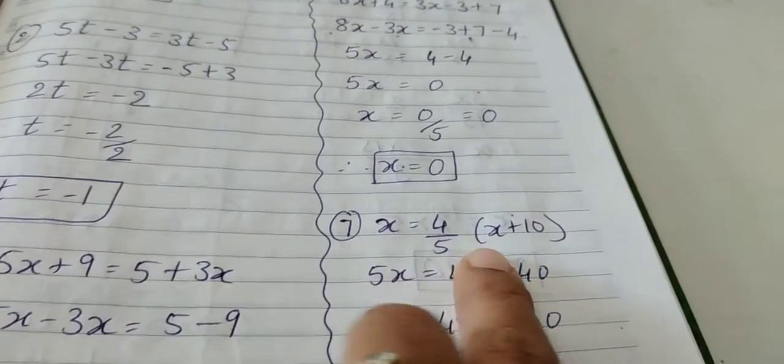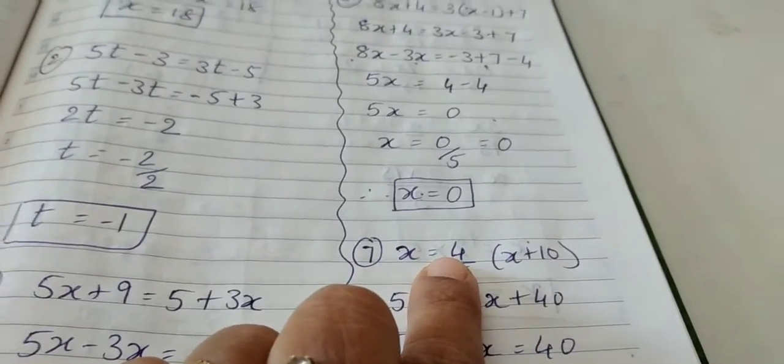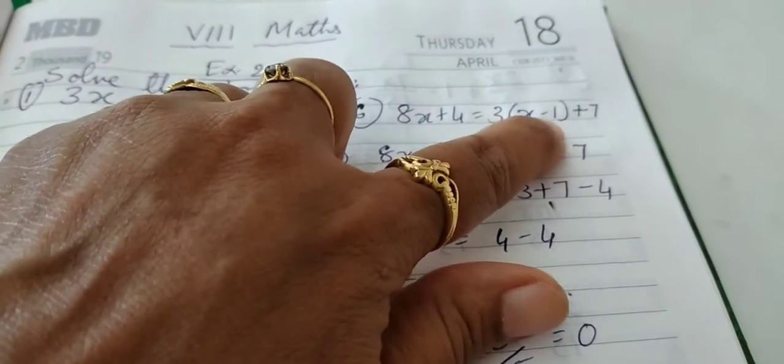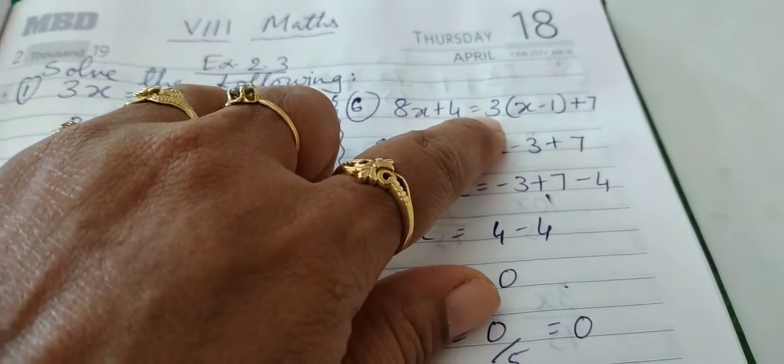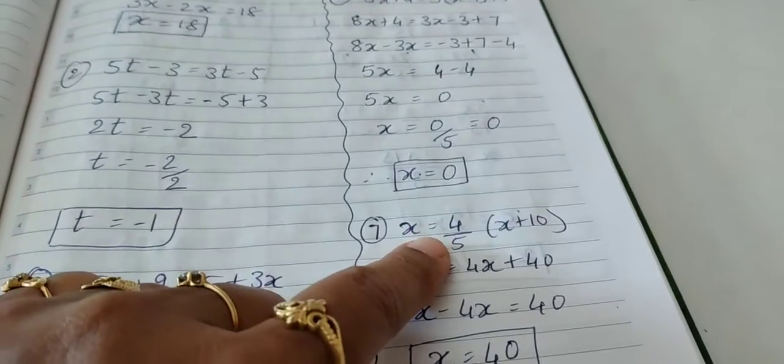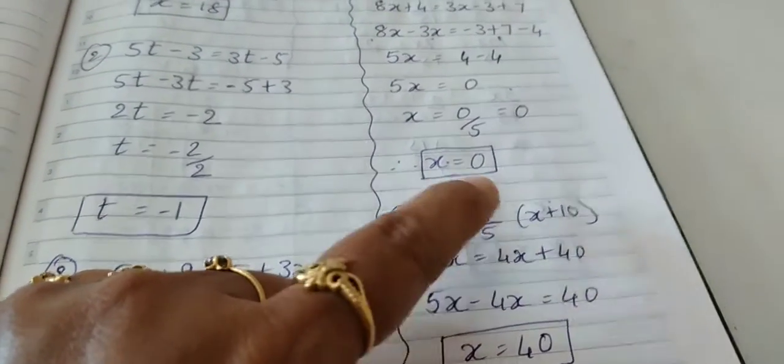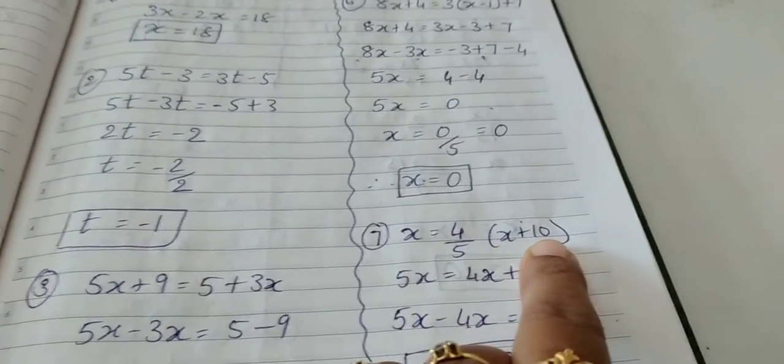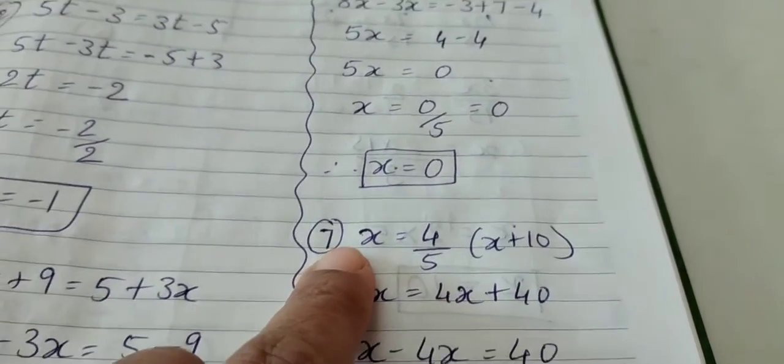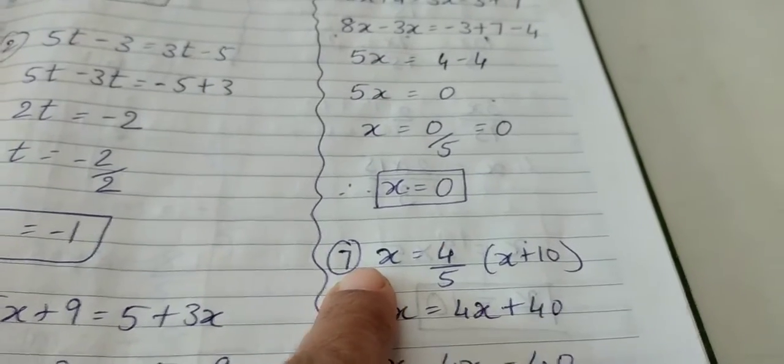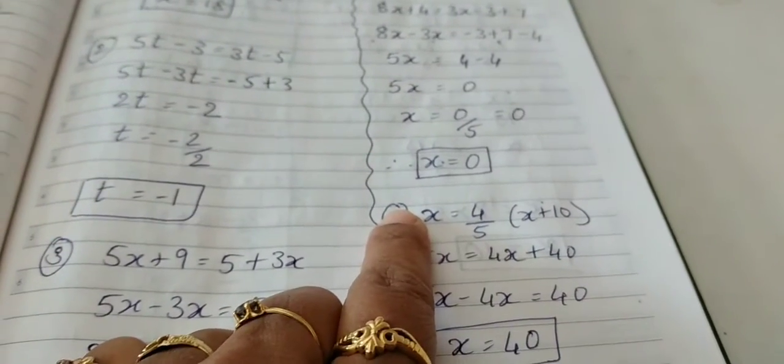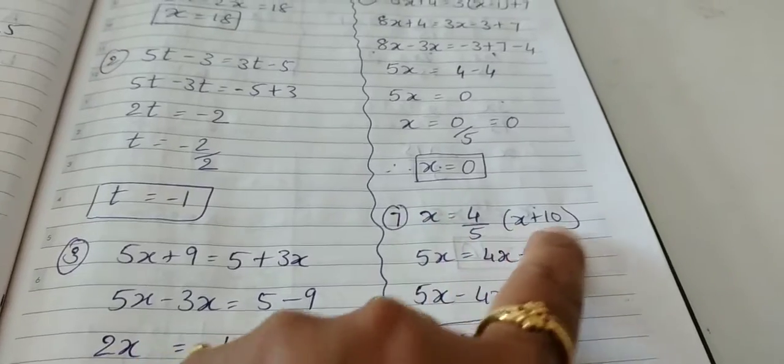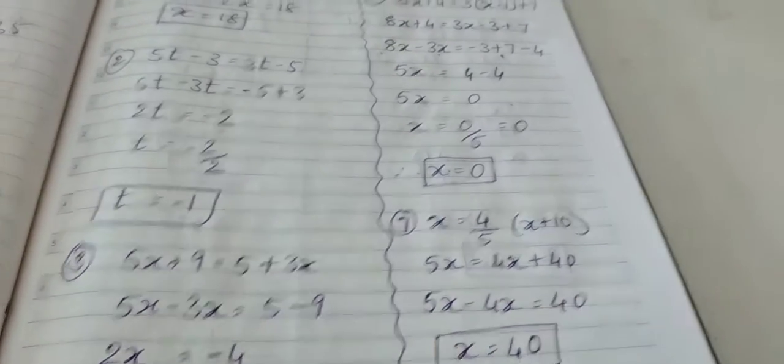x is equal to 4 by 5 multiplied by x plus 10. Here, what is the difference between this sum and the previous sum? There only 3 is there which is multiplied with the bracket, it is not a fraction number. And here it is a fraction number 4 by 5. It has a denominator. So instead of multiplying the denominator with these two terms in the bracket, I would take 5 to the other side of the equal to sign. So 5 when it goes on the other side, denominator will become numerator. So 5x is equal to 4x plus 40.